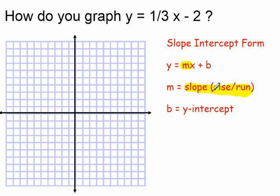or the rise over the run. So in that case it's one-third, and the b is going to be the y-intercept, which in this case is going to be minus 2. That minus has to come with the 2 to mean a negative 2 y-intercept.